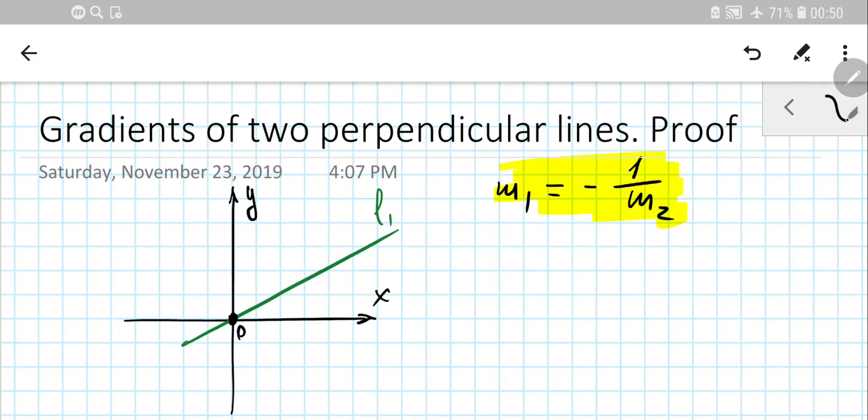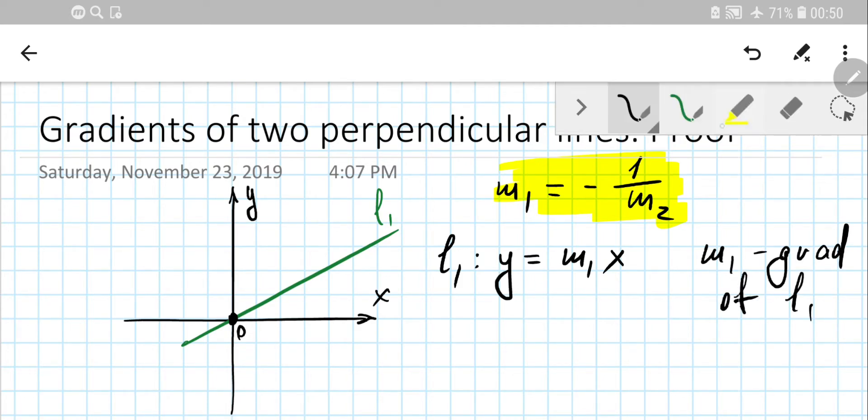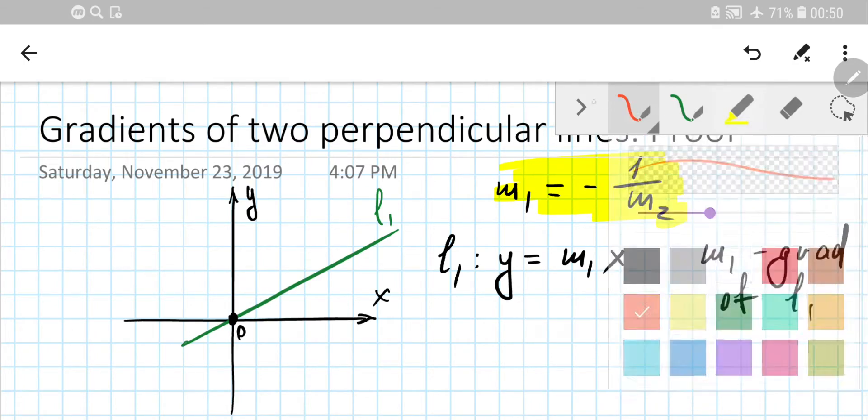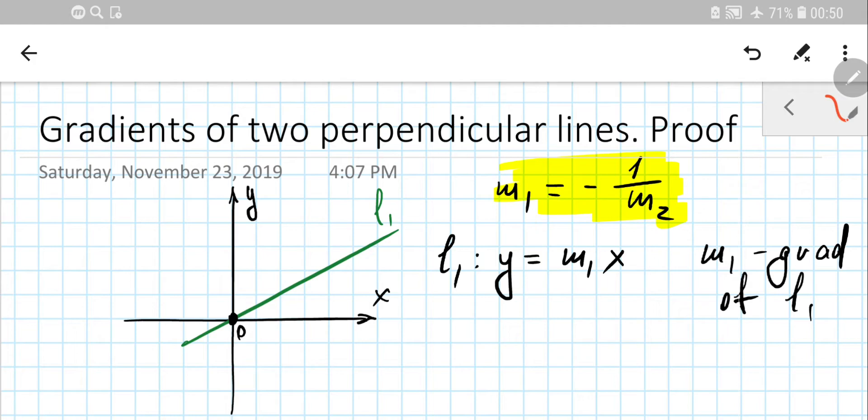So let's say for simplicity that line 1 goes through the origin. It might go through actually any point, but for simplicity of the proof, I'll just use that case. So let's have an equation in gradient intercept form for line 1 in the form m1 times x, where m1 is the gradient of the first line. We have another line, I put it red, which is perpendicular to line 1.